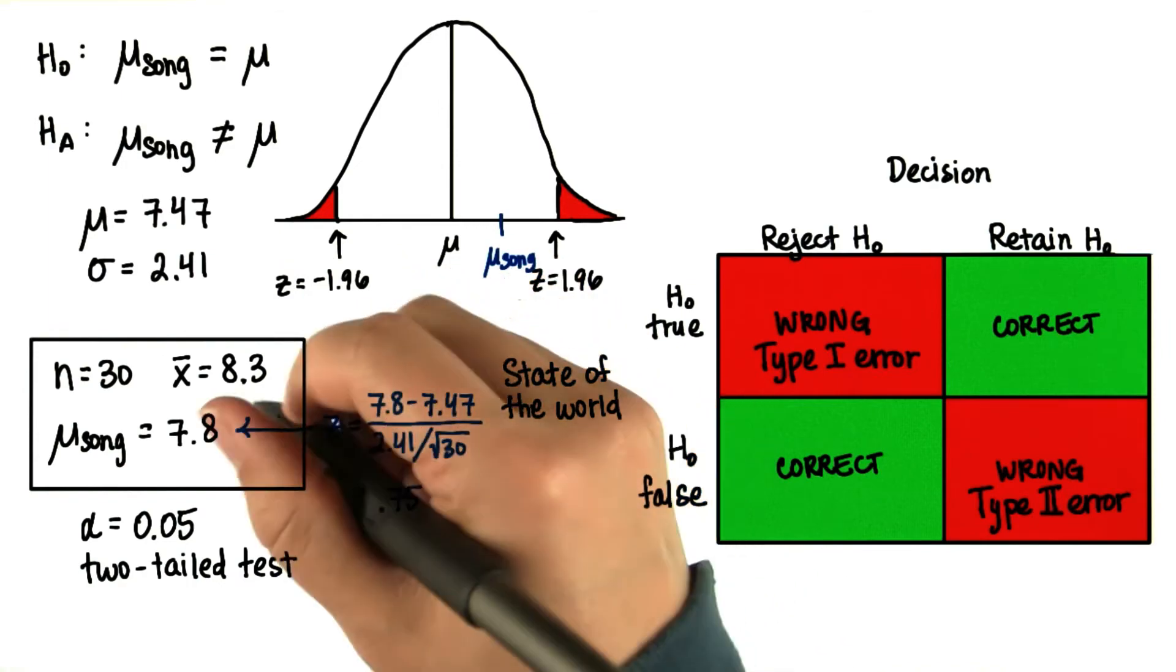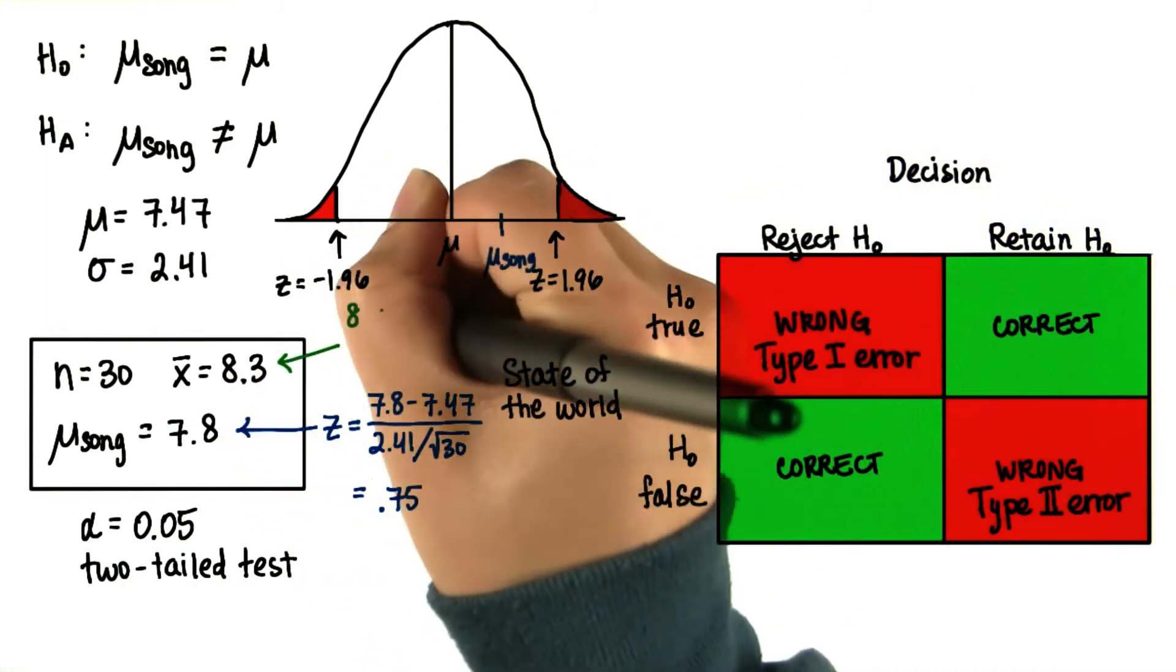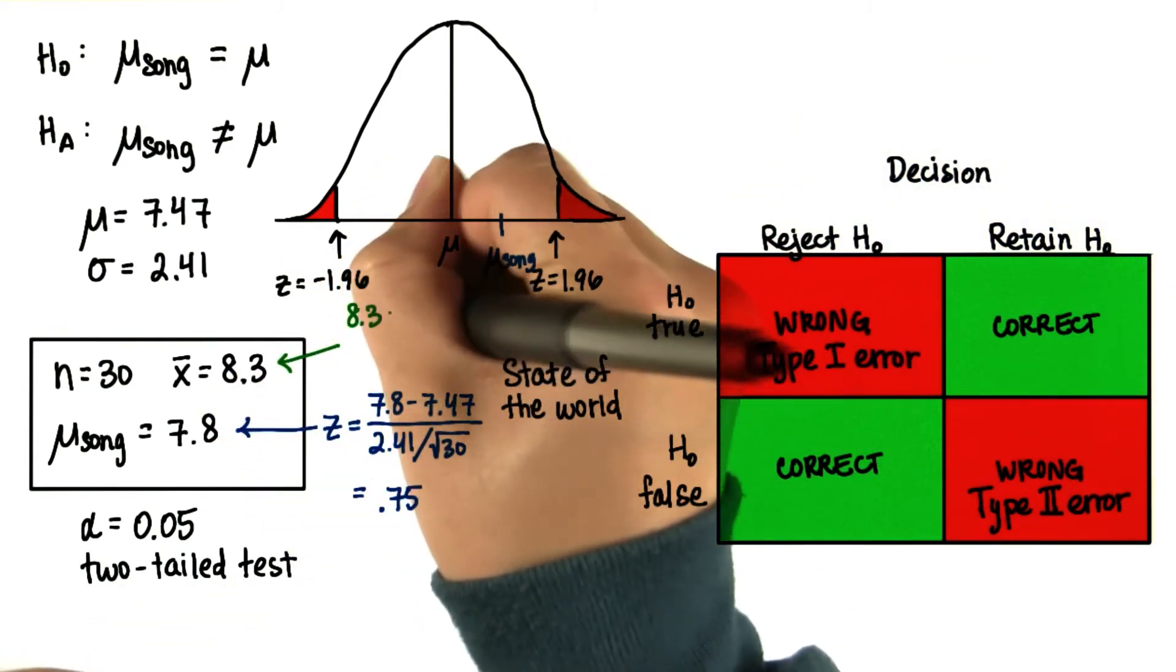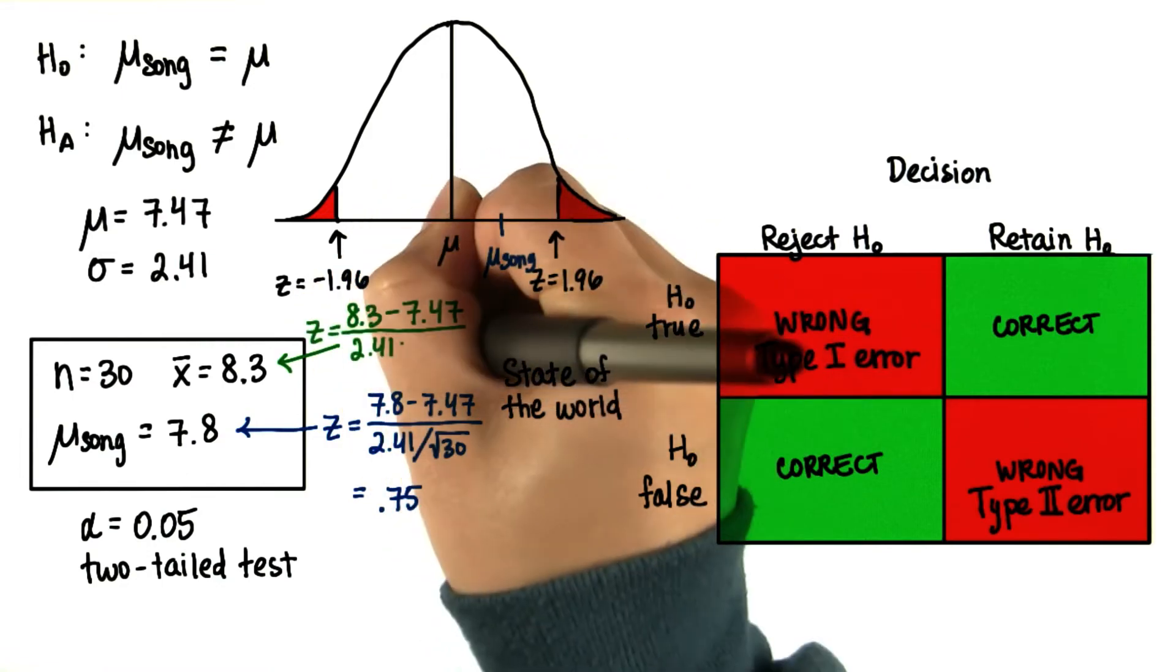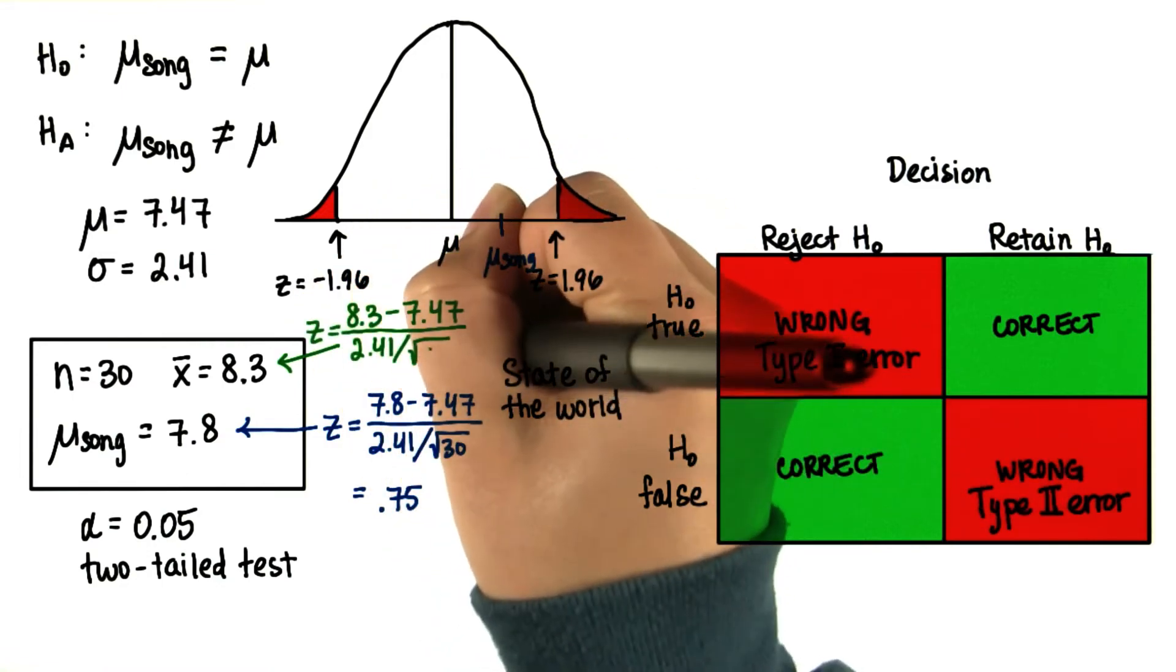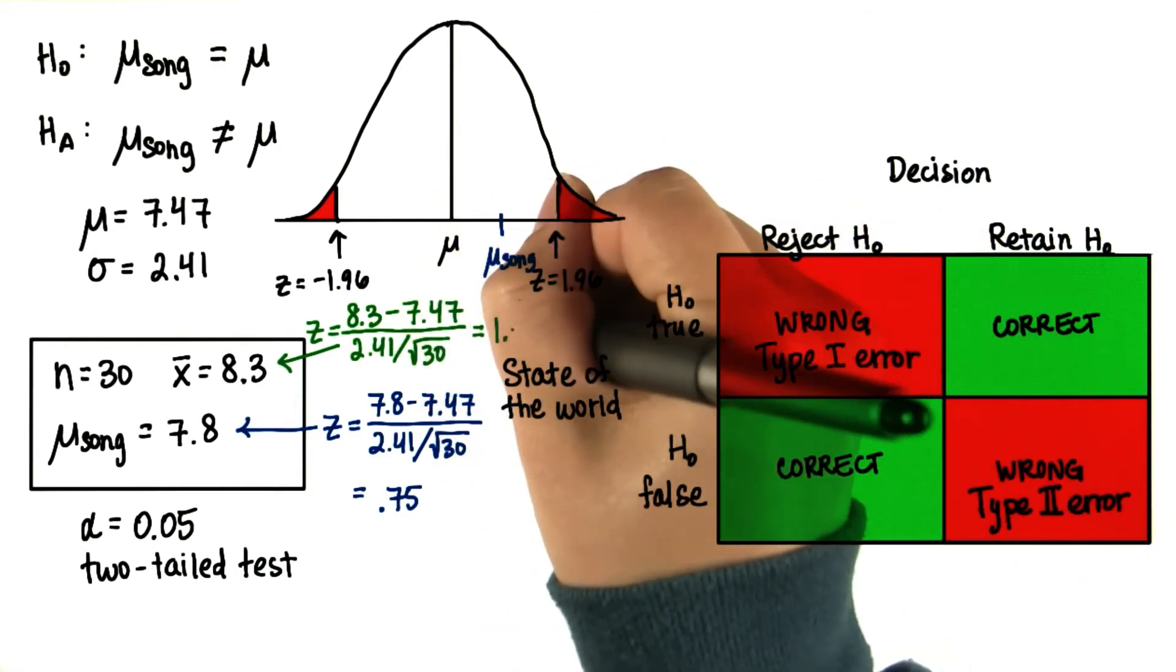If we find the z-score of our sample, we do the same thing that we did here, but instead 8.3 minus 7.47 divided by 2.41 over root 30. This is about 1.89.